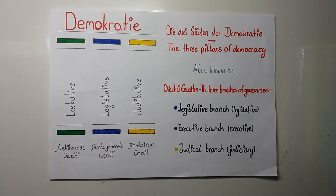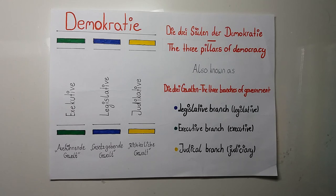The second branch is the executive branch — the government. The federal government consists of the chancellor and his or her ministers. The elected government has the power to implement the laws the Parliament has made, make sure that the laws of the country are obeyed, make agreements with other states, and organize public services.